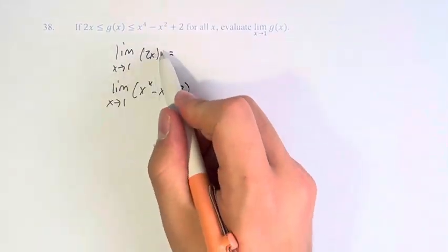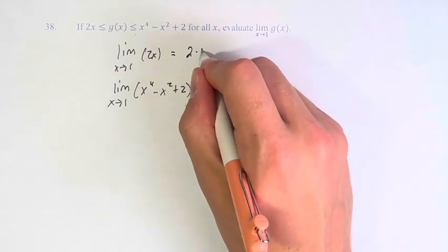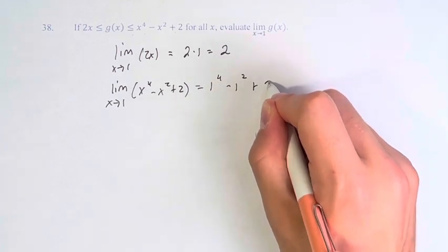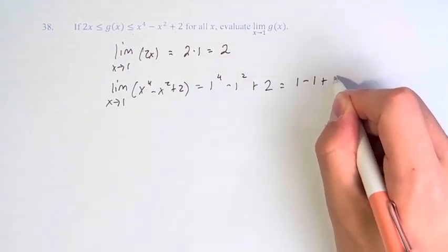We do that by just plugging in 1 here directly. So, this is 2 times 1, which is 2. And this is 1 to the fourth minus 1 squared plus 2, which is 1 minus 1 plus 2, which is 2.